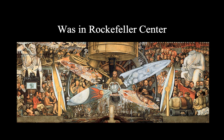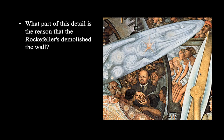He made a name for himself and traveled around the world painting murals — most of them in Mexico, but some in other places. This one was in Rockefeller Center in New York City, and it was demolished. If you look at this part of the mural, you might figure out why: that is Lenin right there. Rivera was a communist, and the Rockefellers were a major wealthy American family, so they would not have thought kindly of having a communist image in their capitalist building. They demolished this mural while he was finishing it.